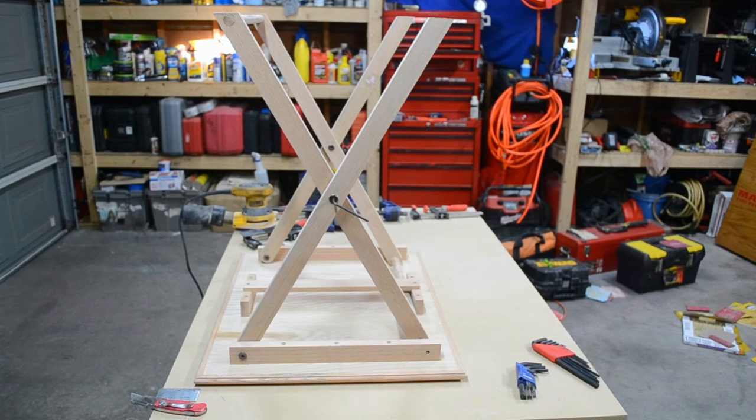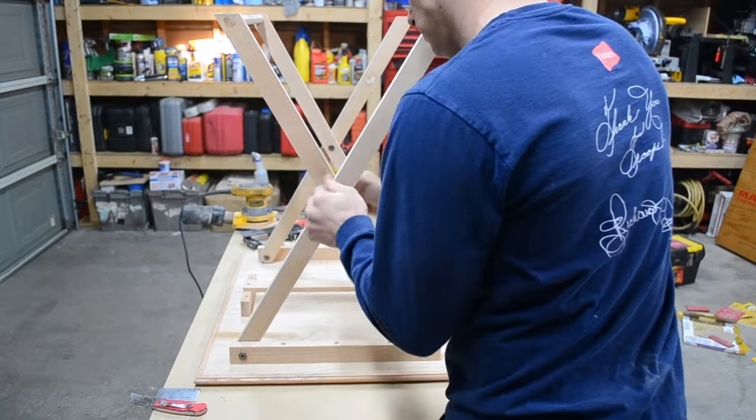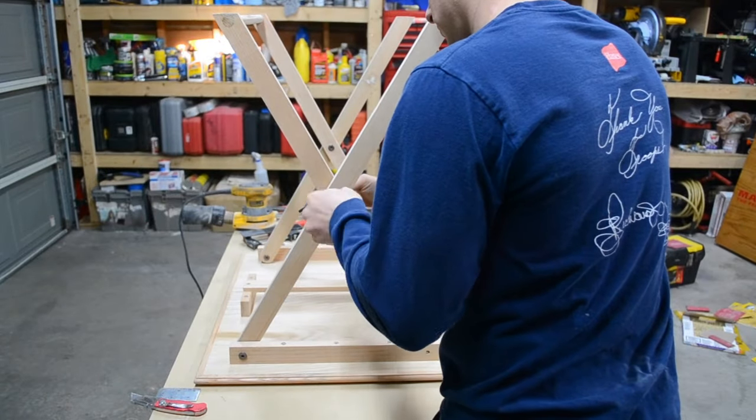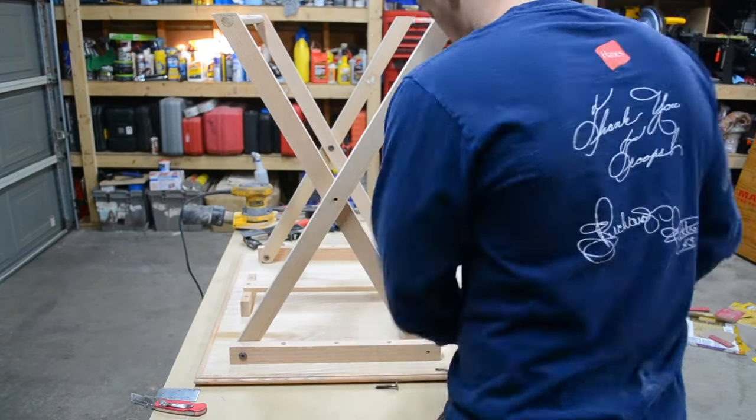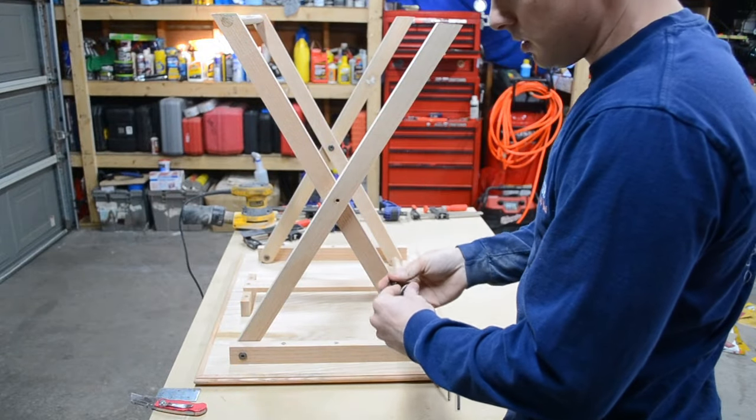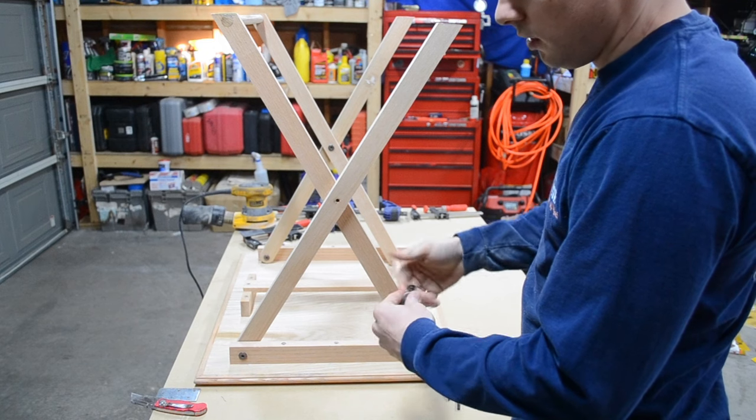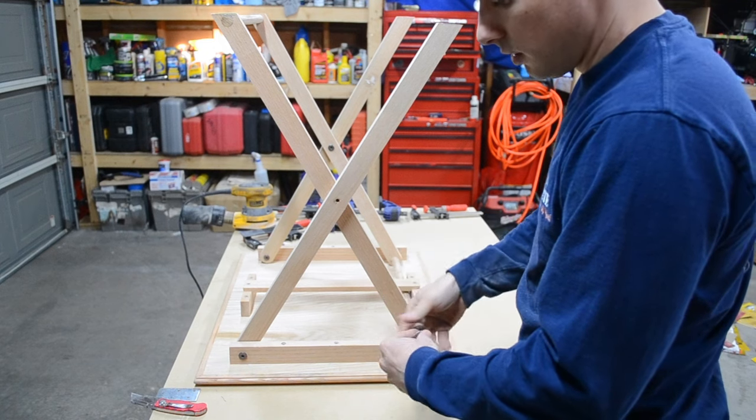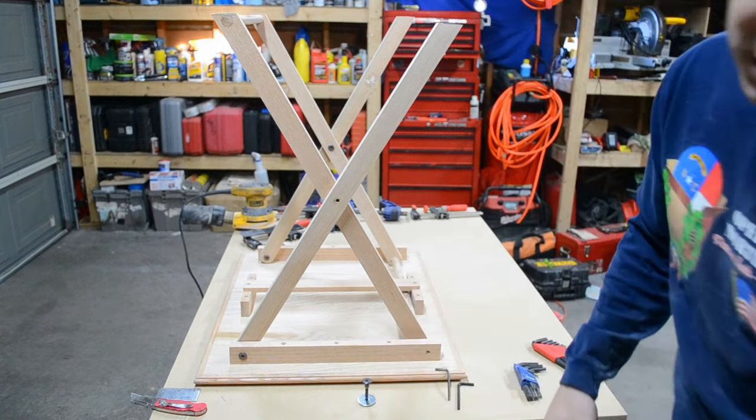So now that we have the legs all matching up, now all we need to do is disassemble the entire piece and sand everything down to a finished sand before we start the stain. Make sure that you keep all your parts together so that you don't have to go back to the store and buy more because you can't find it in your garage somewhere.